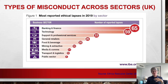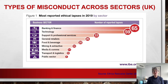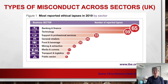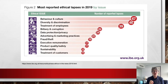Looking at types of misconduct across sectors: previously, governments were at the top, but since 2019 in the UK, the top sectors are banking and finance, technology, and support and professional services. In Australia there have been dilemmas with some of the big four banks; with technology we've seen issues with key players like Facebook and Twitter. The next slide looks at reported ethical lapses in 2019 by issue, again in the UK.